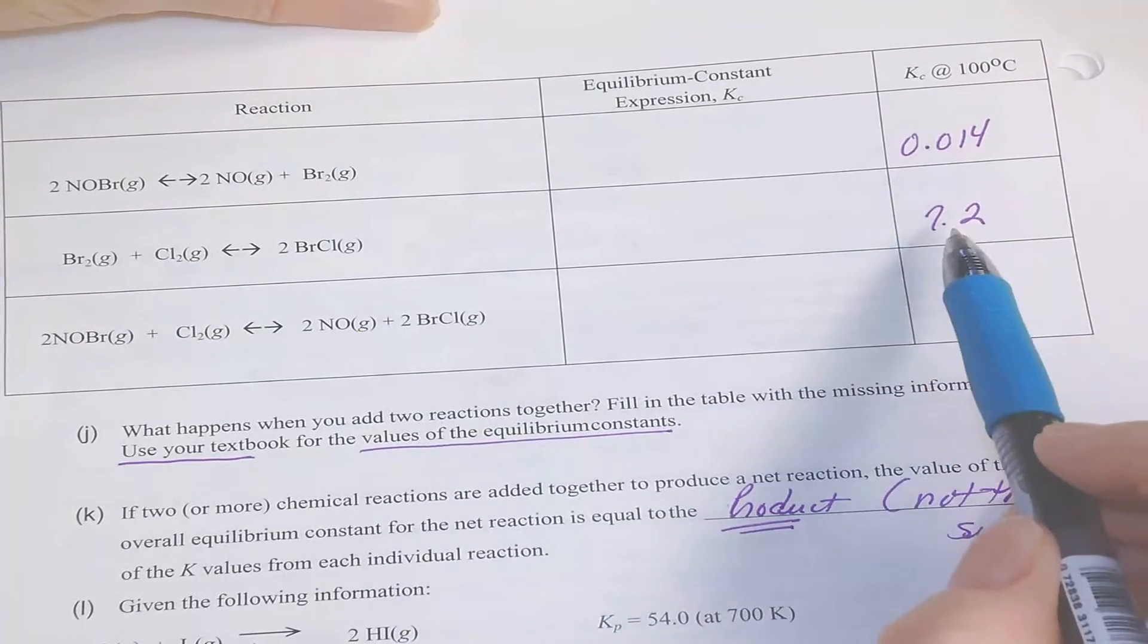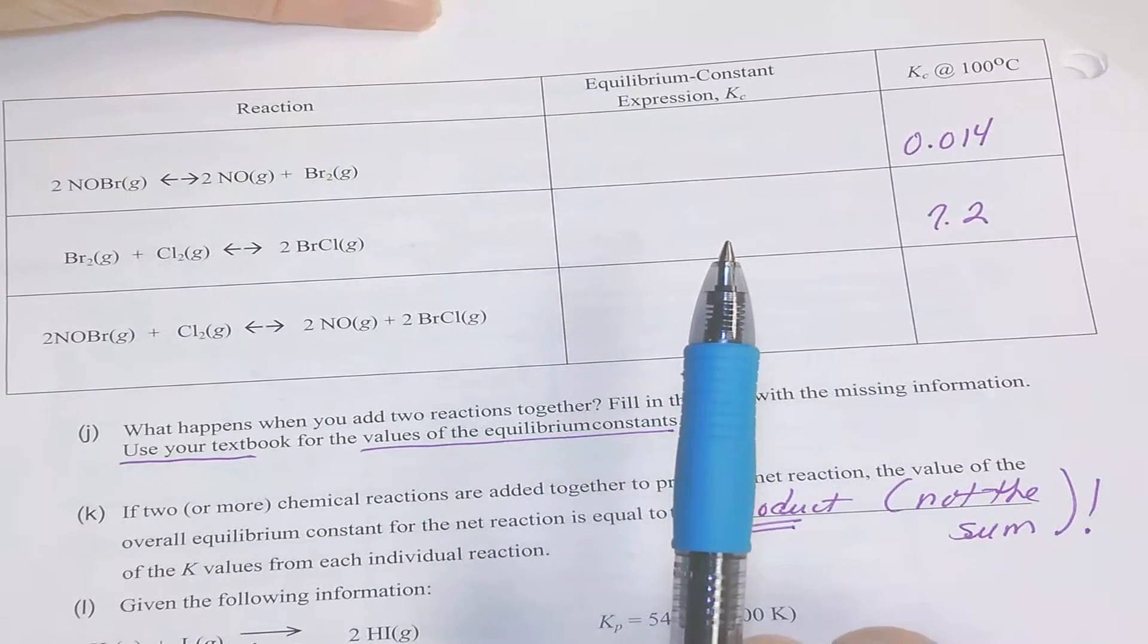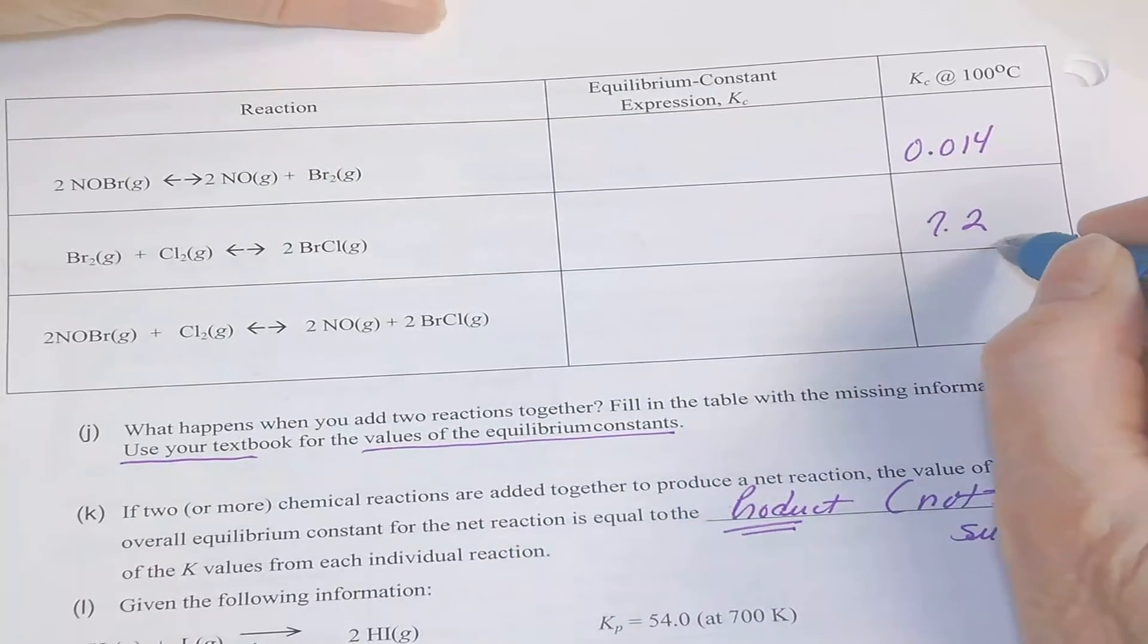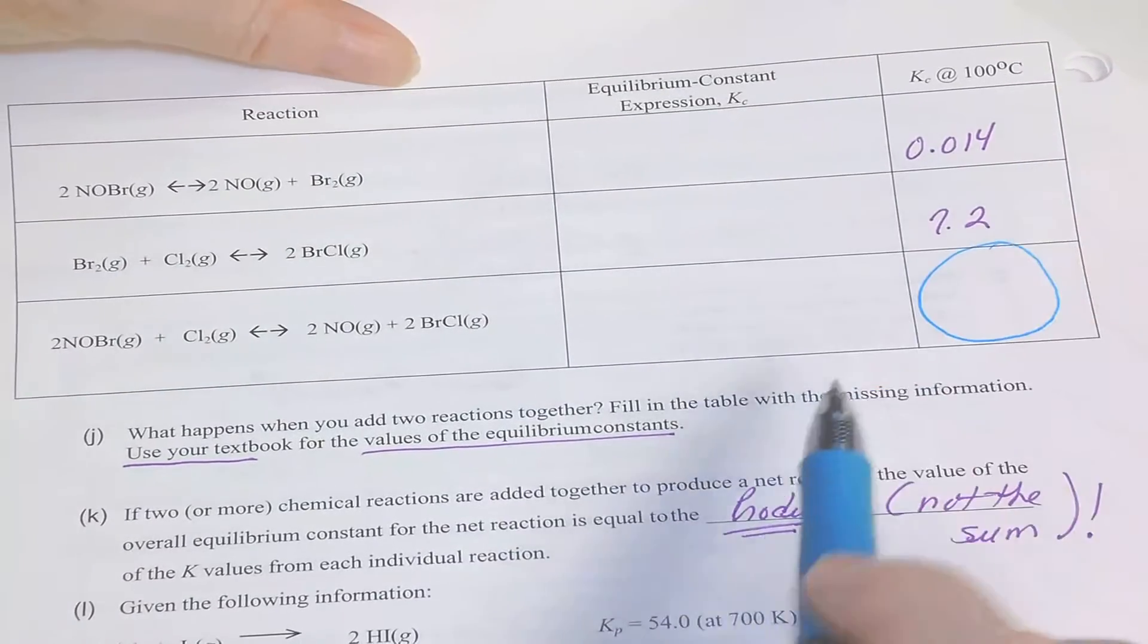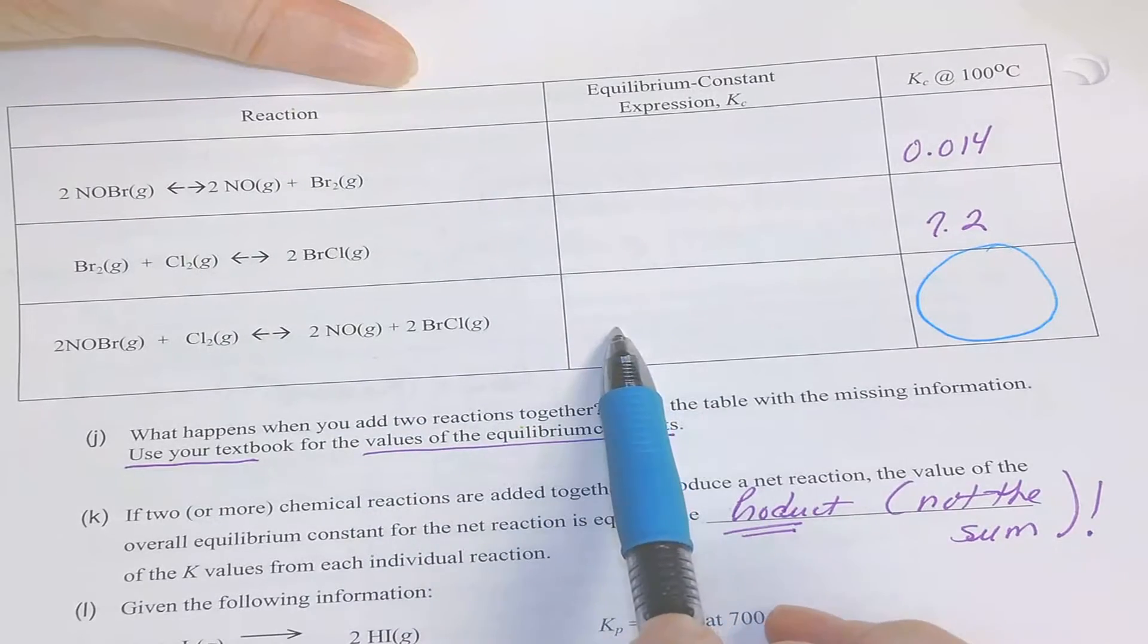I have given you the equilibrium constants for these, so you would not have to look them up. To get this equilibrium constant, you will need to add up these reactions.